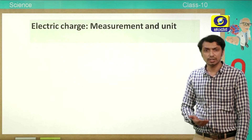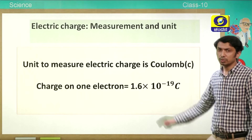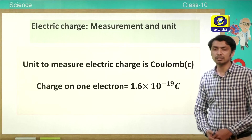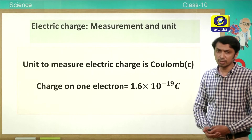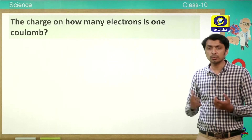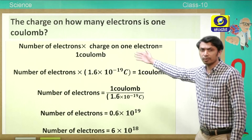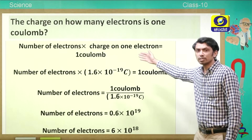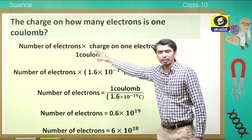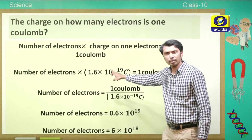How do we measure electric charge? The unit used for measuring electric charge is the coulomb. The charge on one electron is 1.6 × 10⁻¹⁹ coulomb, which is a negative charge. The question is: how many electrons will make the charge equal to 1 coulomb?